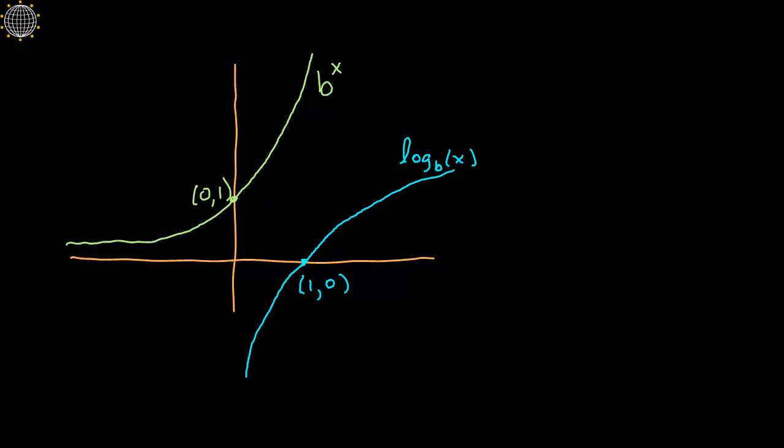And for these to be true inverses of each other, these bases have to match. So 4 to the x is only an inverse to log base 4 of x. If you had log base 5 of x, they wouldn't be inverses, so the bases do have to agree to one another.